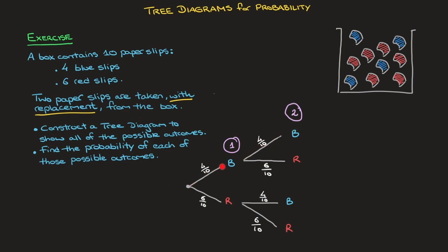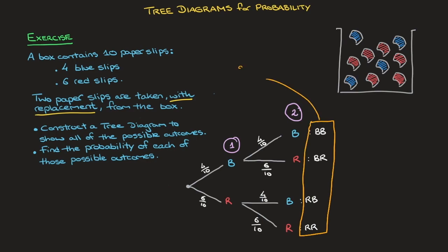Walking along the top branch, we come across blue followed by another blue — so that would be the outcome BB, meaning blue for the first slip and blue for the second. Next, we come across blue followed by red — the outcome BR, blue for the first slip and red for the second. Carrying on, we have red followed by blue — the outcome RB. And finally, R followed by R — the outcome red followed by red. In doing this, we've now listed all of the possible outcomes of this experiment.